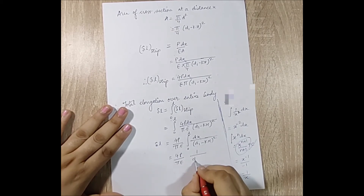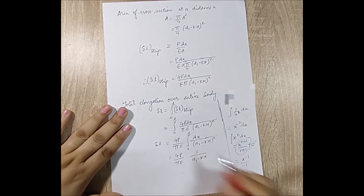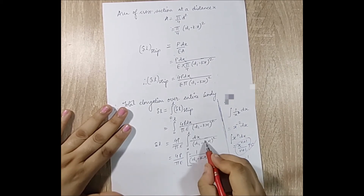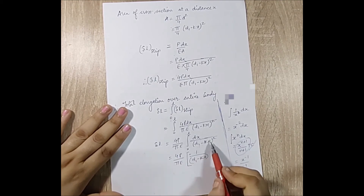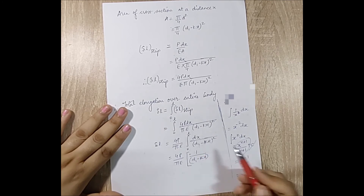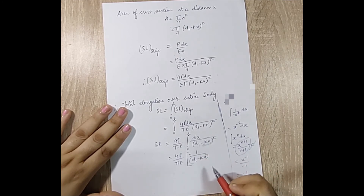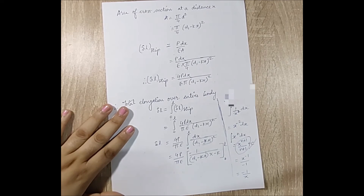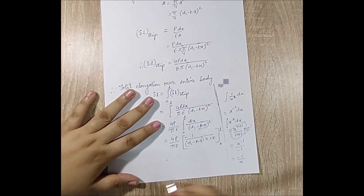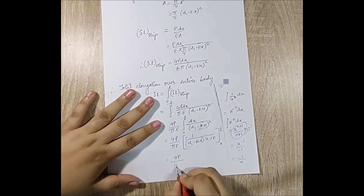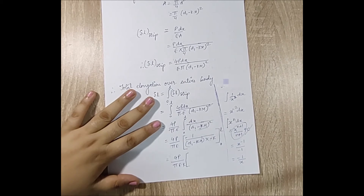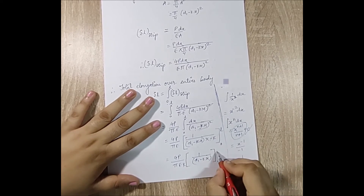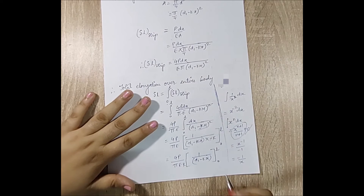By the chain rule, the derivative of (d1 - k·x) with respect to x is -k, so we divide by -k. The two negative signs cancel, giving (4P / π·E·k) times [1/(d1 - k·x)] evaluated from 0 to L.